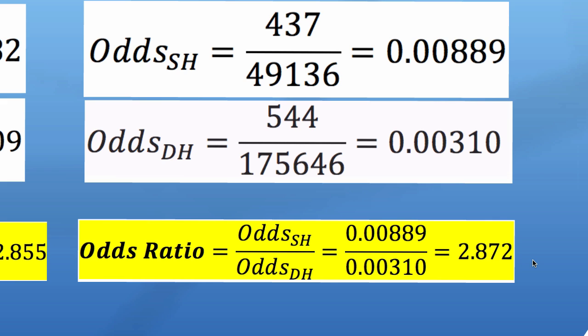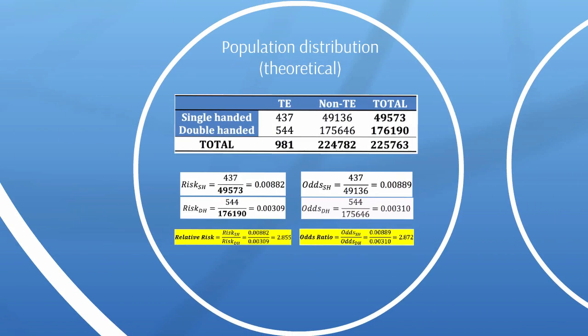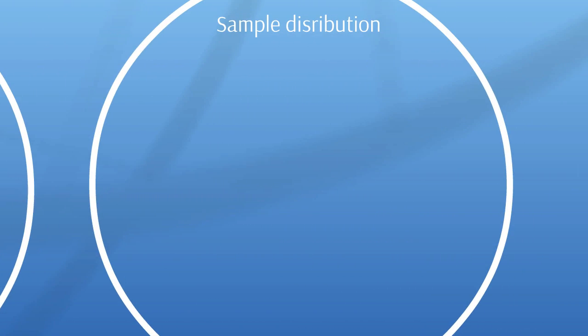We can interpret this. We can say that single-handed backhand players have 2.872 times the odds of developing tennis elbow compared to double-handed. But again, I find that not very satisfying. I can't really see in my head what that actually means, as I could with the risk ratio. So you might ask, what's the point of odds ratios? Why do we have them around? Why don't we just deal with relative risks?